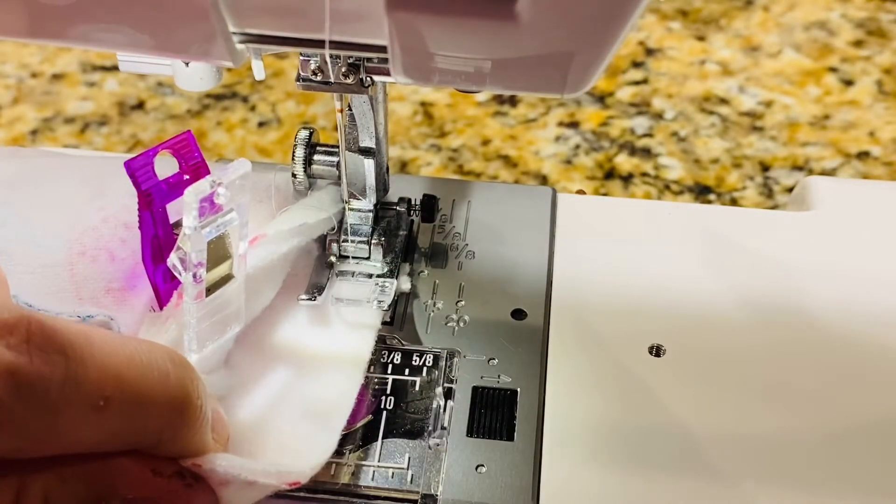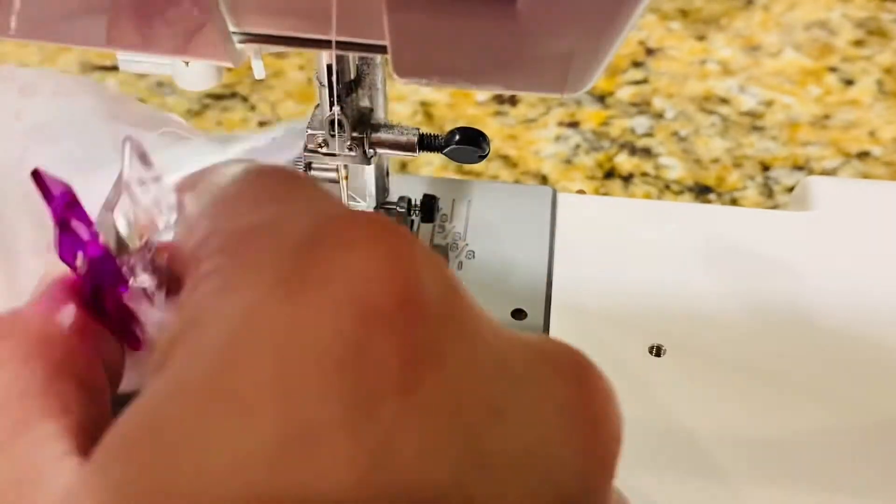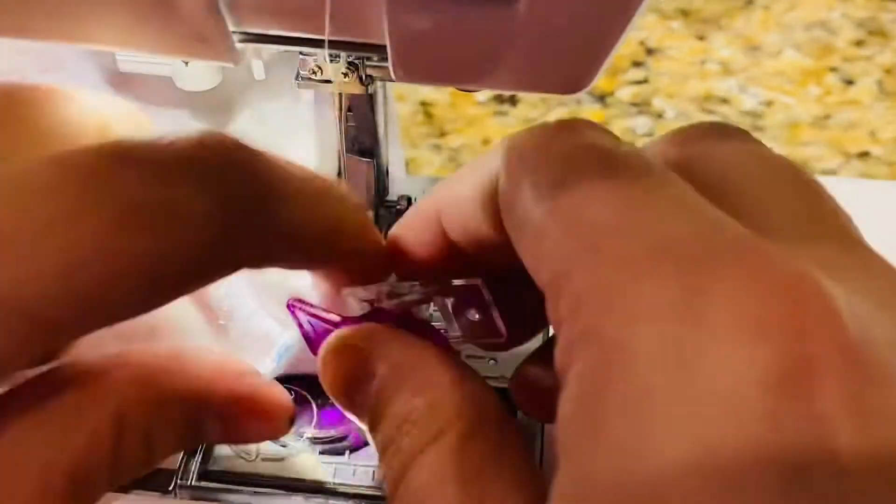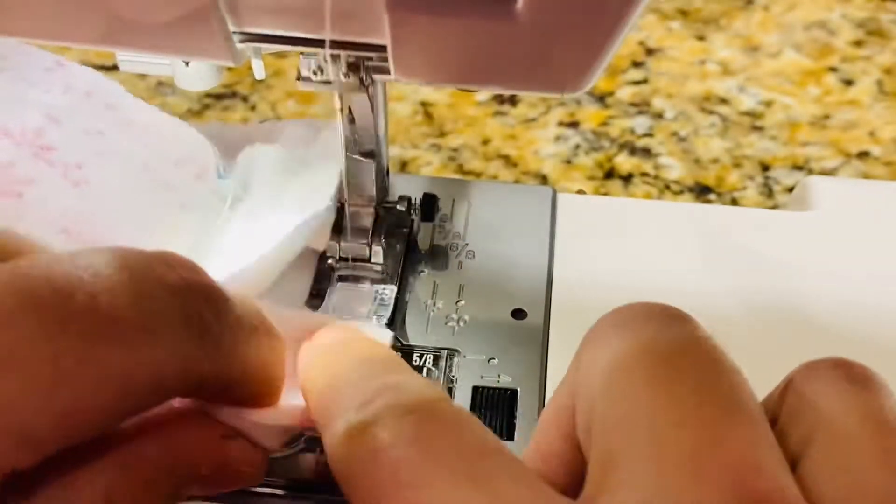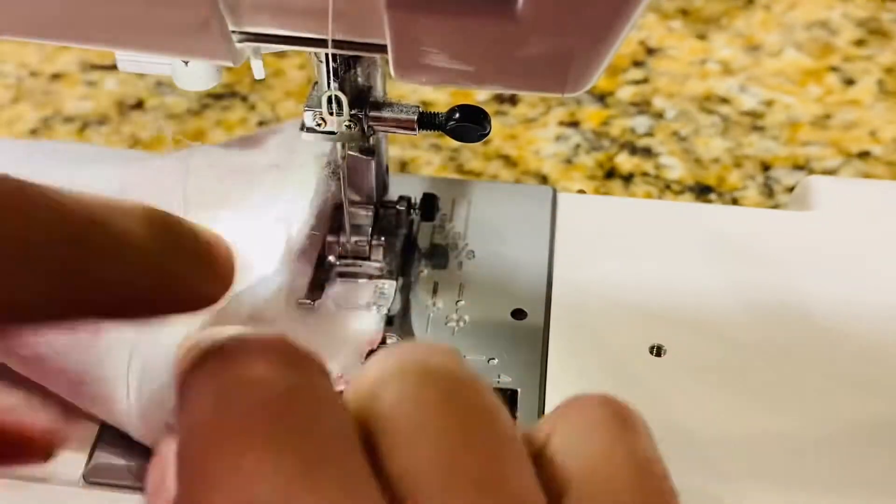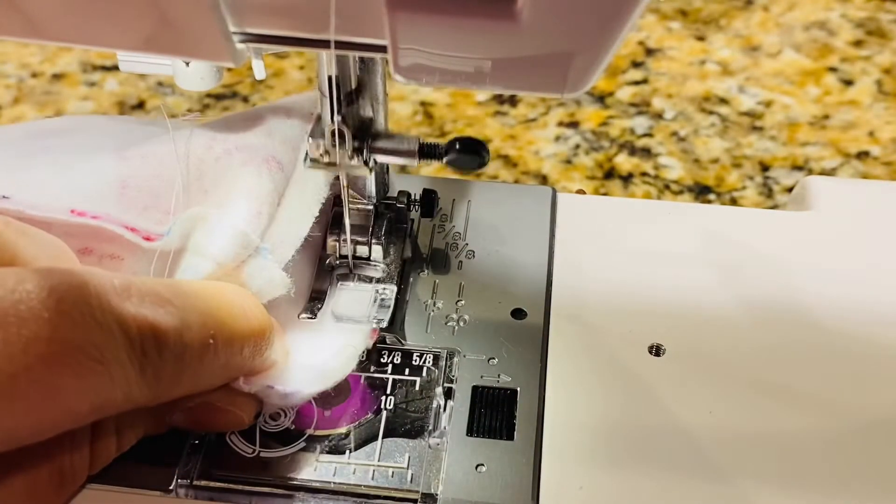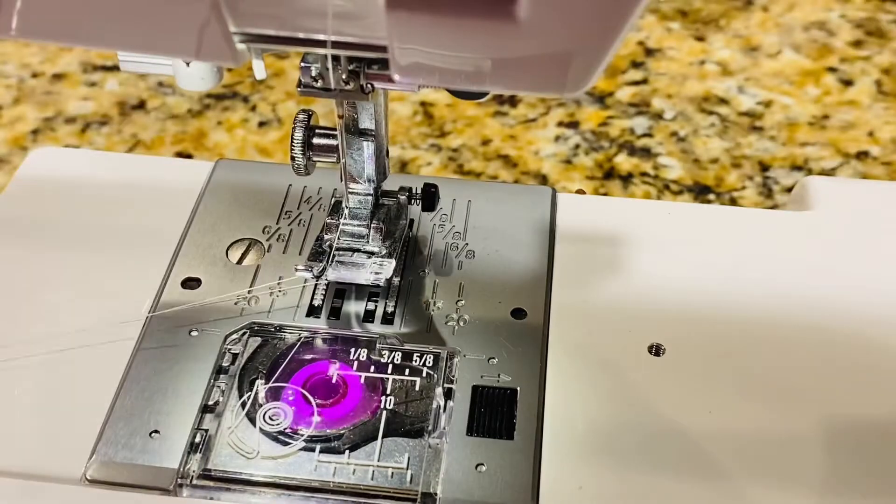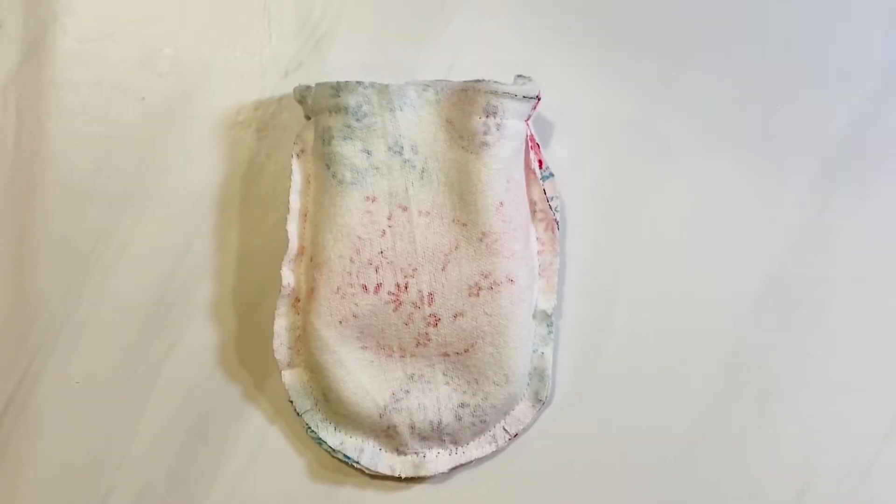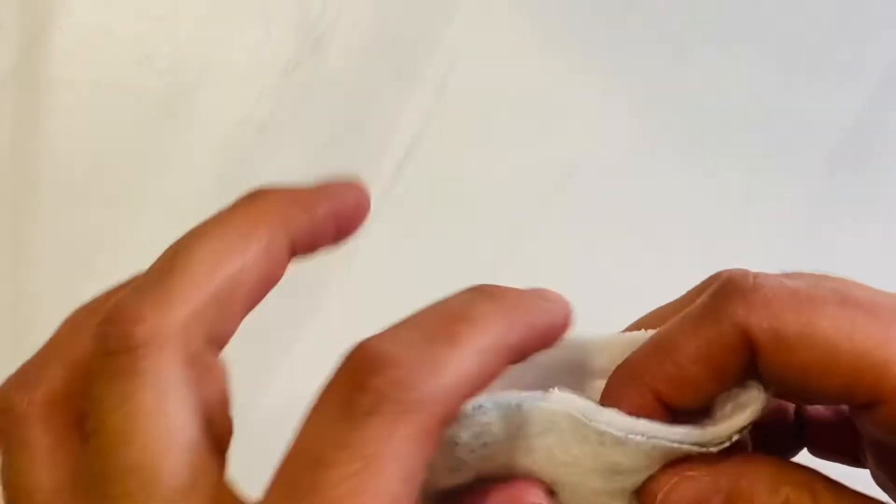Now place it on your machine and you're going to sew it using a one-fourth inch seam allowance. You're just going to pull and rotate your fabric as you sew so that you can get around the whole thing. Tinier things for little babies are a little trickier to sew sometimes. Here's what it looks like when it's all done.